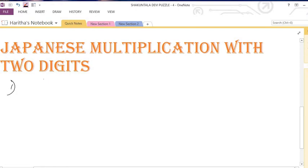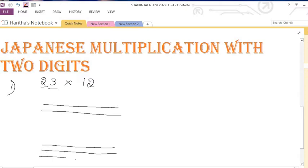So first I am doing the number 23 into 12. To do this multiplication, in this multiplier what is the digit? 2. So just draw two lines. And this digit is 3, so leave some gap and draw three lines here.